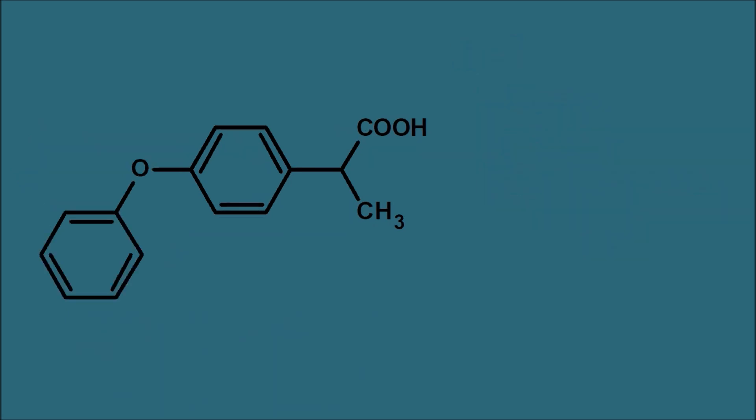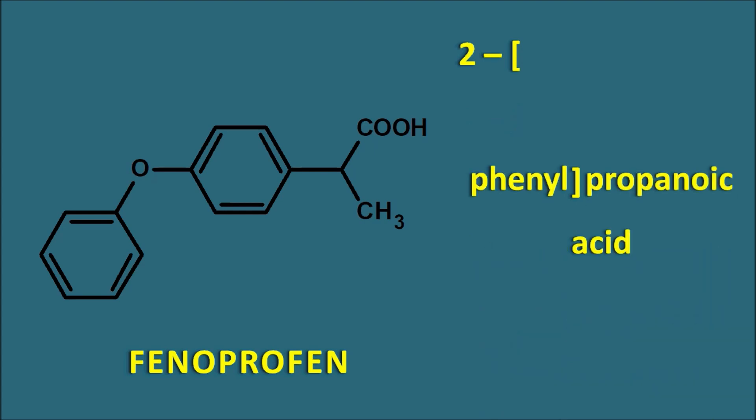The next drug is fenoprofen. Fenoprofen is again a 2-phenyl propanoic acid derivative. At the fourth position on the phenyl ring a phenoxy group is present — so 4-phenoxy. 4-phenoxyphenyl propanoic acid is nothing but fenoprofen.